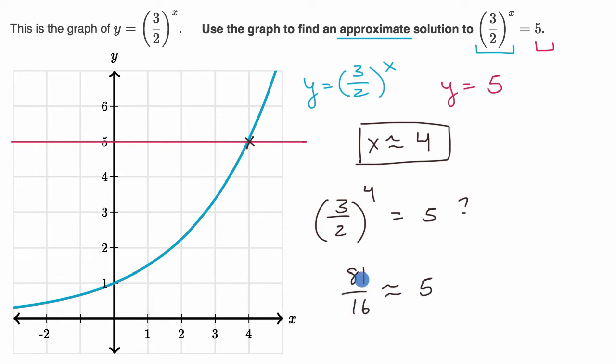16 times five is 80. So it's not exact, but it gets us pretty close. And if you had a graphing calculator that could really zoom in, you would see that x is slightly different than x equals four.